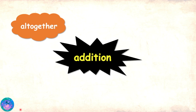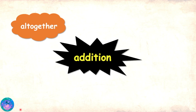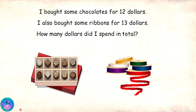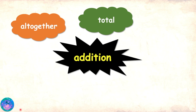Interesting. Are there more such keywords? Oh, yes. And I will share some more situations and we can together identify more keywords. Here is another real-life situation. I bought some chocolates for $12. I also bought some ribbons for $13. How many dollars did I spend in total? In this case, the word 'total' tells us that we have to bring together the amount spent on chocolates and the amount spent on ribbons. In other words, we have to add them. So, now I know two keywords for addition: 'altogether' and 'total.'